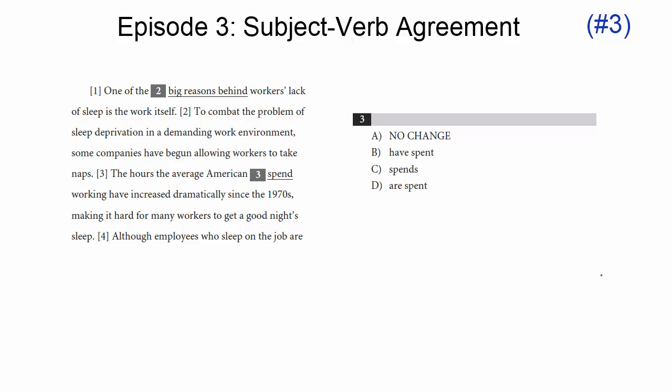Moving to the first grammar error of our set, we're going to look at number three, subject-verb agreement. This is an error that used to be super popular on the old test, but while it does appear on the new, it's not at all very common, but you still need to know how to handle it.